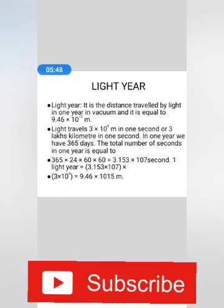Light travels 3 × 10^8 meter in one second, or 3 lakh kilometers in one second. In one year, we have 365 days.